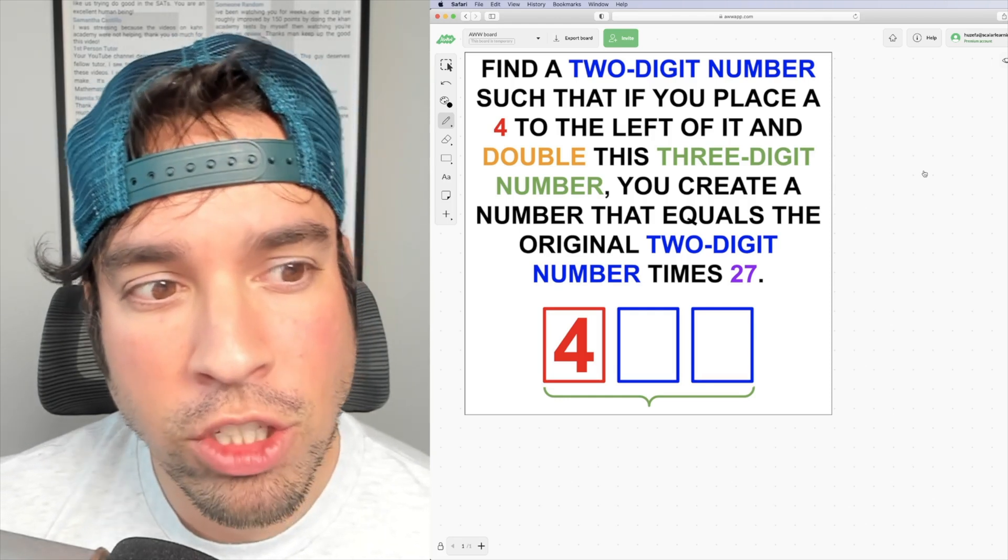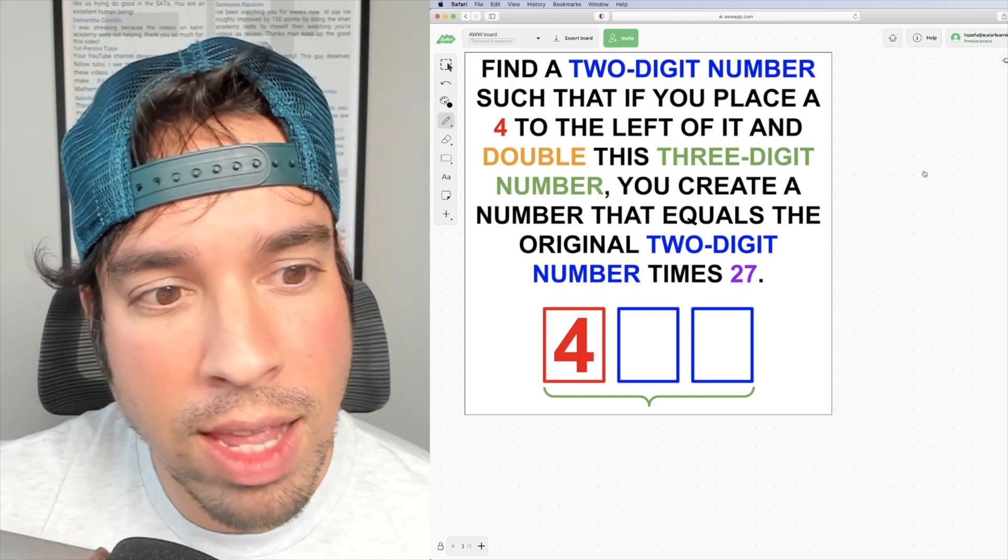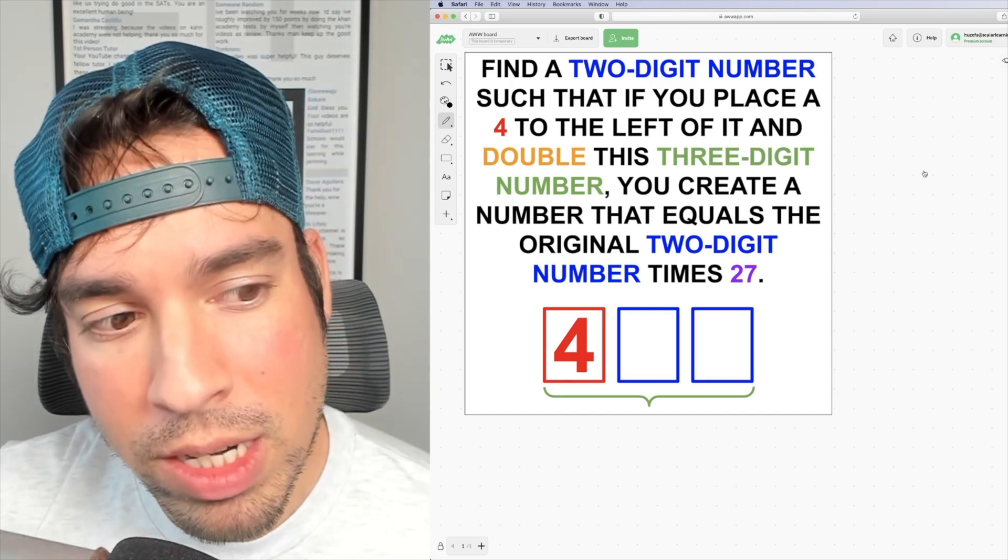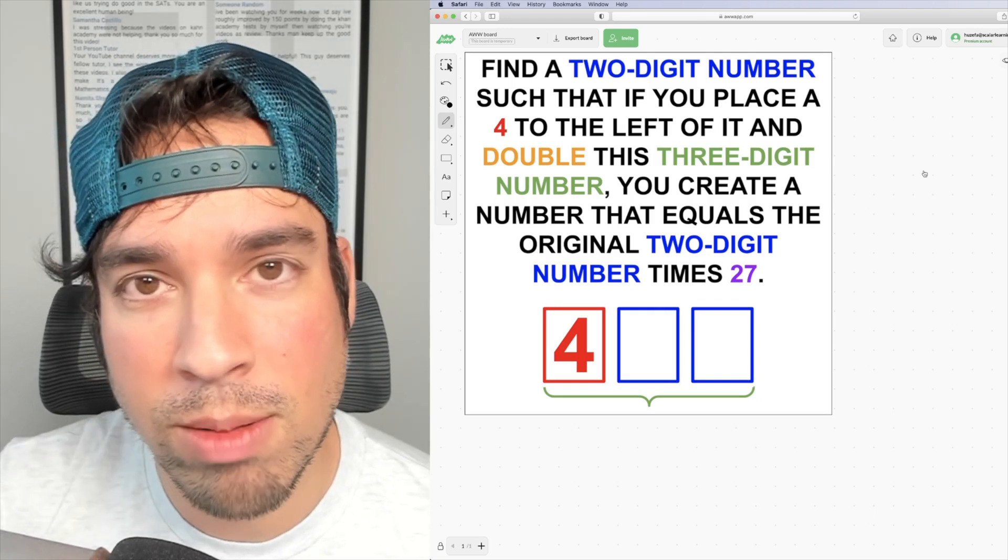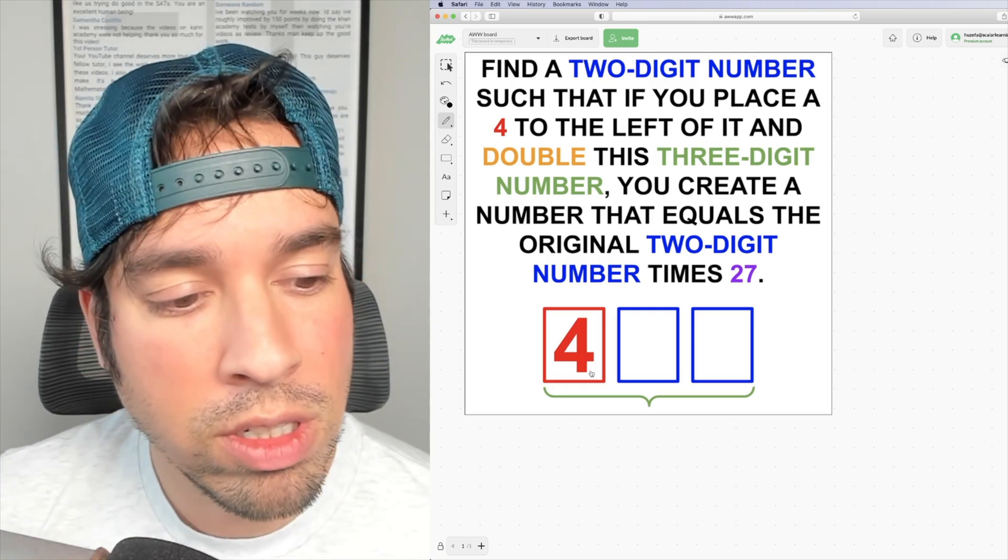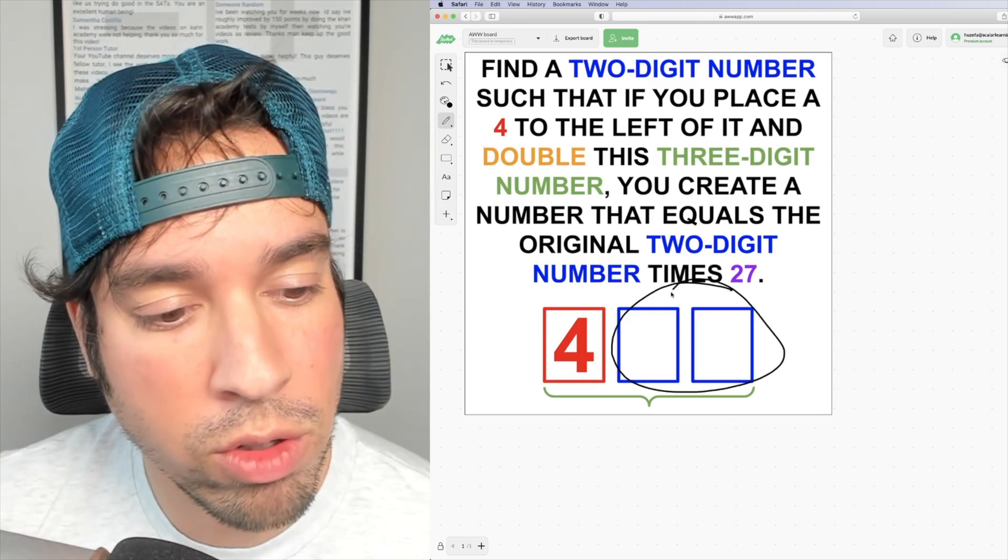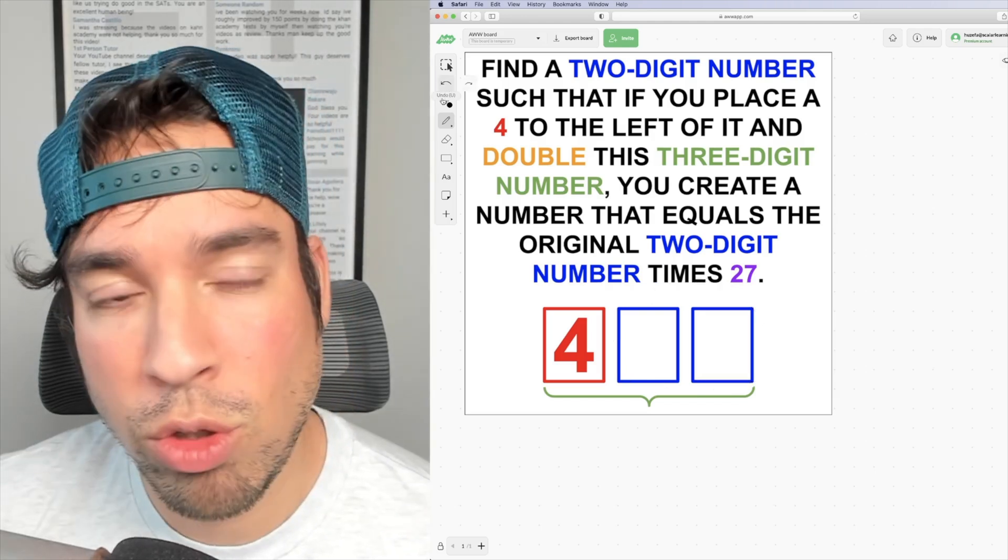Find a two digit number such that if you place a 4 to the left of it and double this three digit number, you create a number that equals the original two digit number times 27. So you can see here, these two blue rectangles are the placeholders for this two digit number.